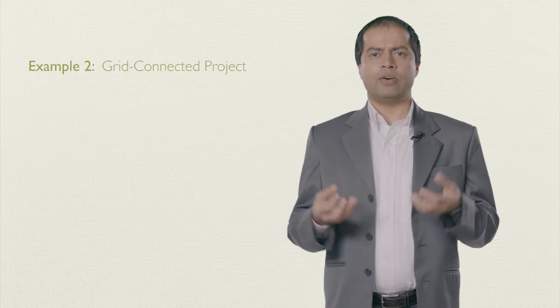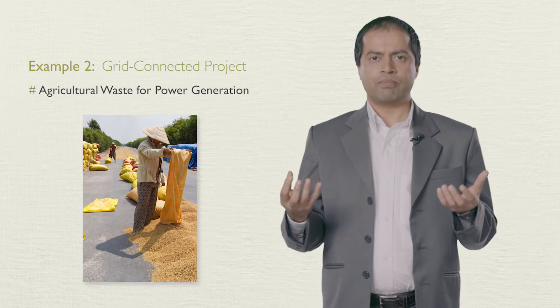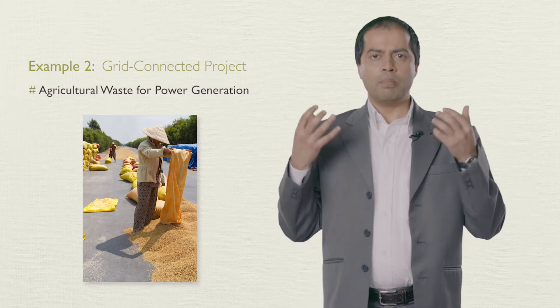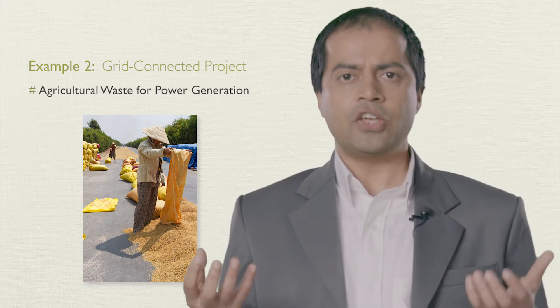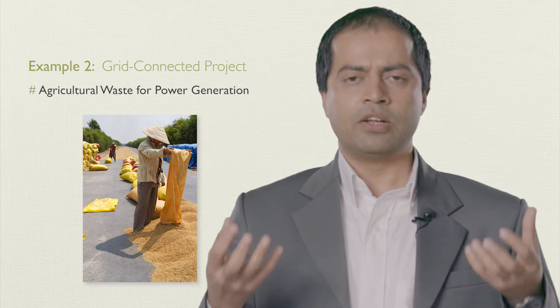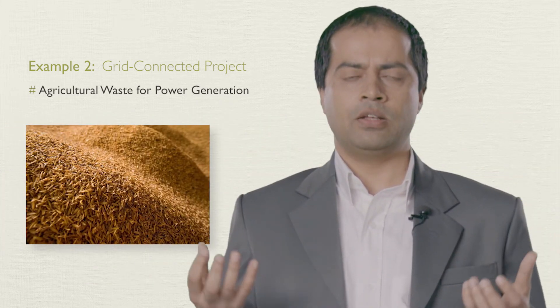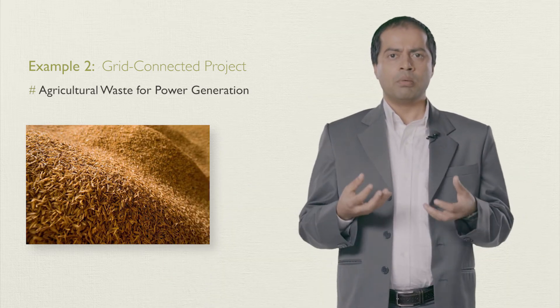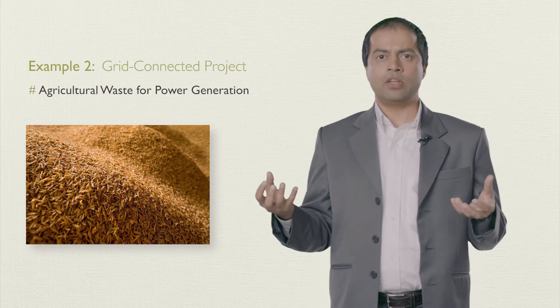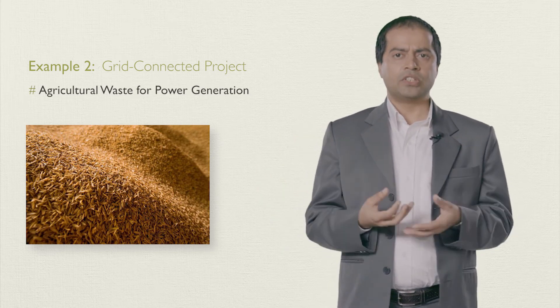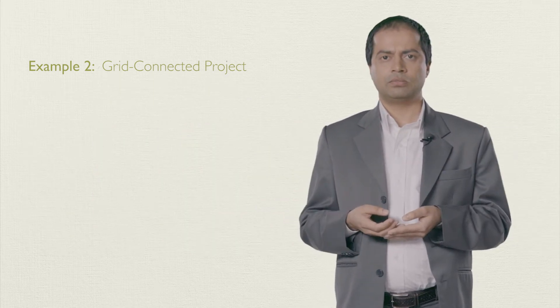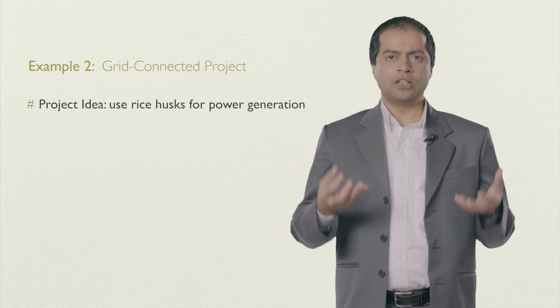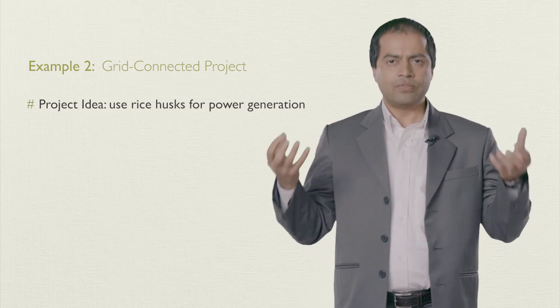Let's take an example of a grid-connected project that uses agricultural waste for power generation. In many countries worldwide, especially in Asian countries, rice is a staple food. You get rice by milling paddy in rice mills. The by-product of milling is called rice husk. A relatively big mill produces many tons of rice husk every year. There is no commercial use of such husk, and it is simply burnt. A rice mill owner, let's say from Vietnam, has an idea of utilizing this husk for power generation using gasification technology.